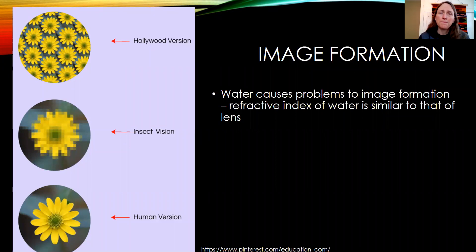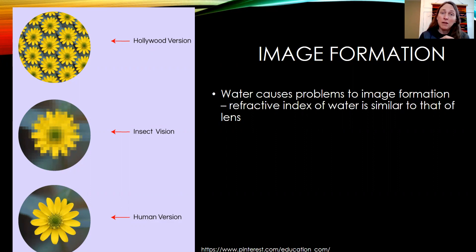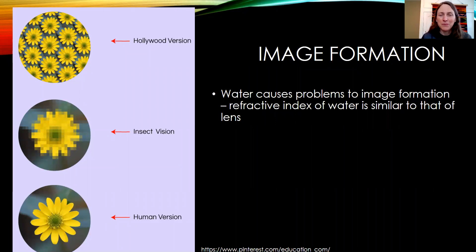So how do insects form images? The Hollywood version — where each little hexagonal pixel creates a full image — is not really true at all. Each hexagon produces a pixel of light intensity and possibly color. An insect looking at a flower would see a very pixelated image versus our human eyes, which see much more resolution and detail. Insects don't see the Hollywood version with multiple full images.